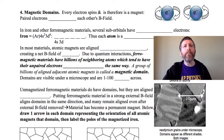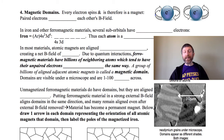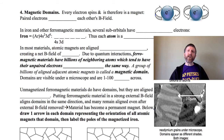Now we can talk about magnetic domains. Magnetic domains are what make permanent magnets permanent magnets, and without them we would have no permanent magnets. Magnetic domains are present in all materials which are ferromagnetic.